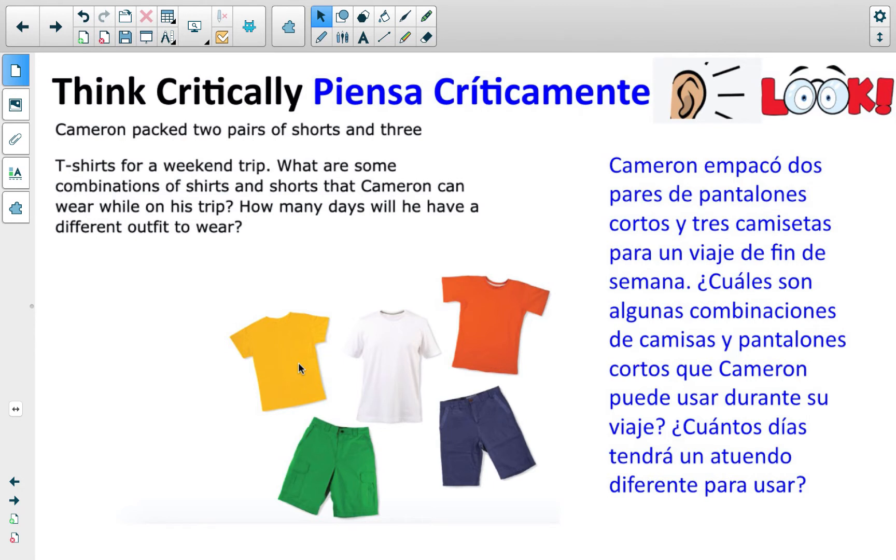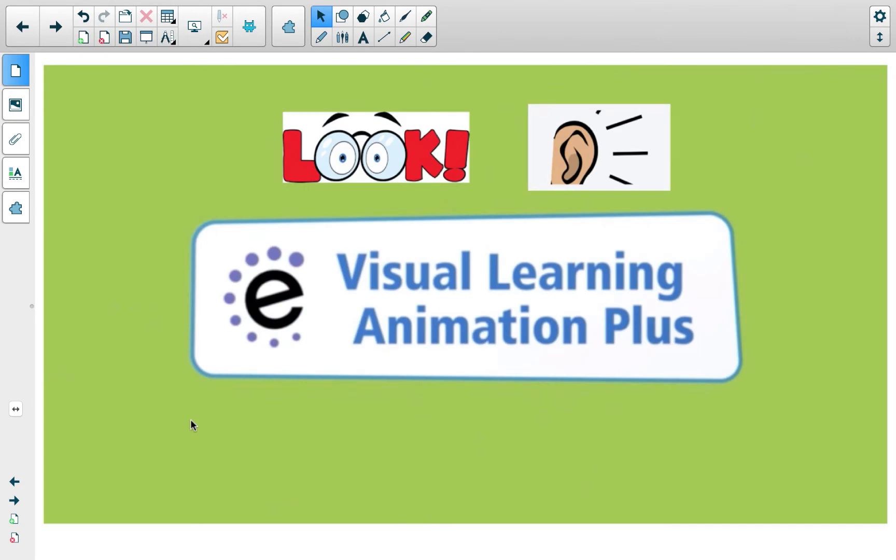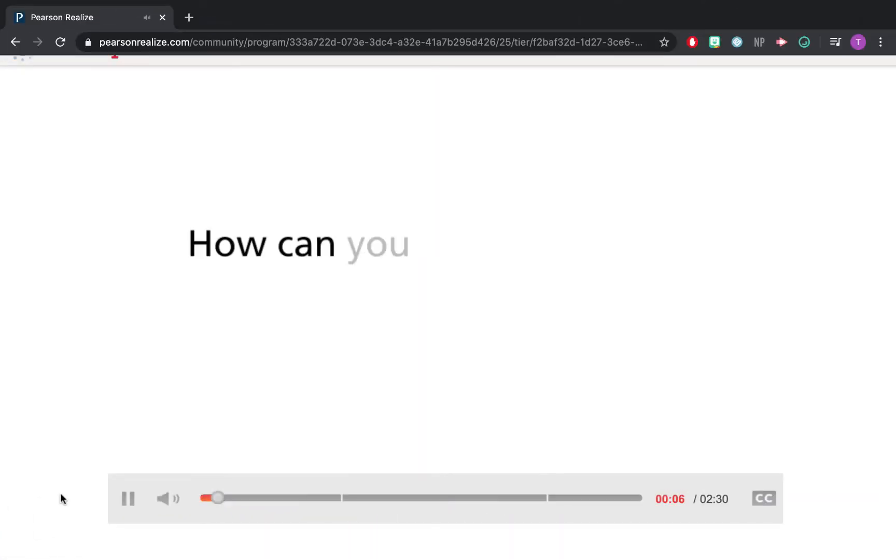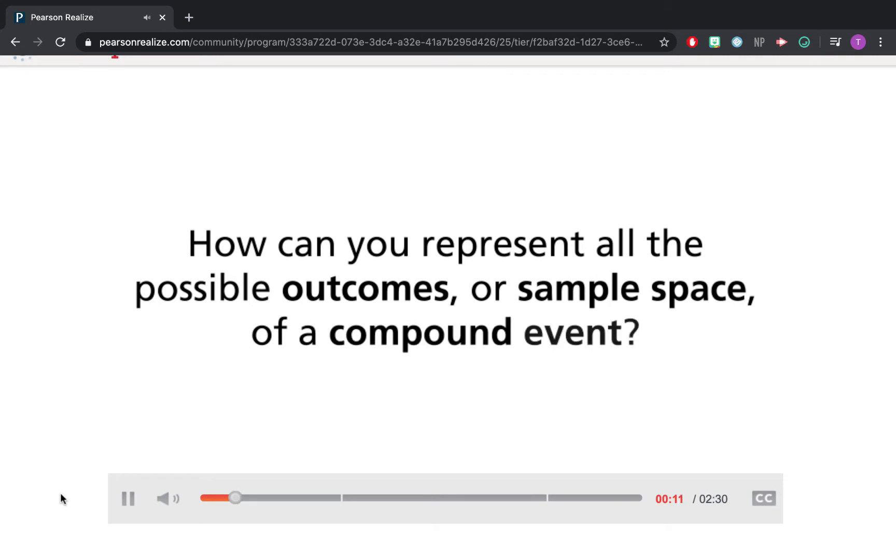He could, for instance, wear a yellow shirt and green shorts here. That's one possible combination. What I want you to think through here before I go through the slide, how many total combinations could he wear, making sure that each day is a different outfit? Now we're going to keep that in mind, we're going to take a look at a video. How can you represent all the possible outcomes, or sample space, of a compound event? Think about this question during the lesson.